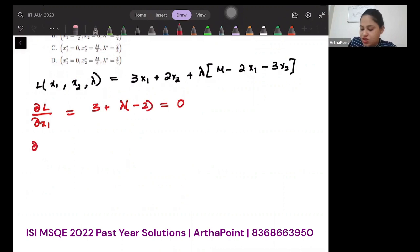Then differentiate with respect to x2. I will get 2 plus lambda minus 3 equal to 0. This gives 3 equals 2 lambda, so lambda will be 3 by 2. The second equation gives 2 equals 3 lambda, so lambda will be 2 by 3.